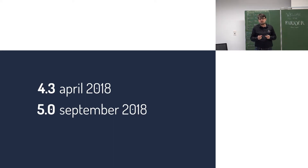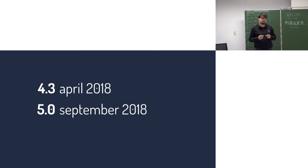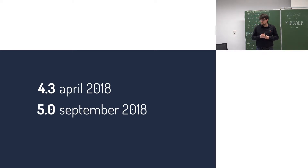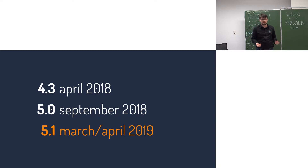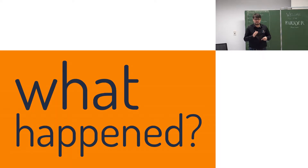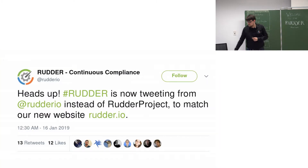In Rudder 5.0, we changed some mostly internal architectural things: we added a proper system API that was previously a bit apart from the standard API, we automated the technique upgrade — so a manual step after Rudder upgrade has now mostly disappeared — and we also improved our Windows agent quite significantly.